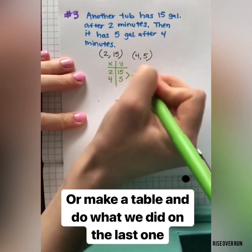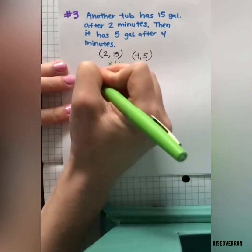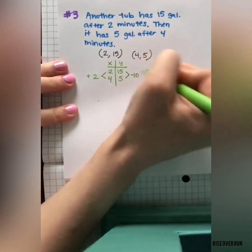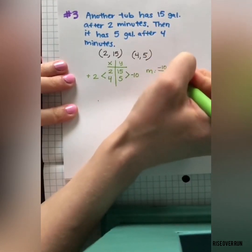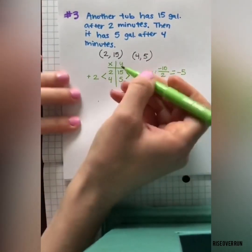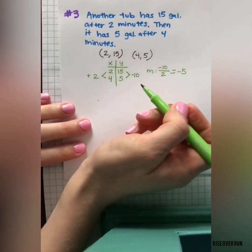This is decreasing by 10. The x's are increasing by 2. So our slope is our change in y over change in x. We can simplify here to get negative 5. That means this water is decreasing 5 gallons every minute.